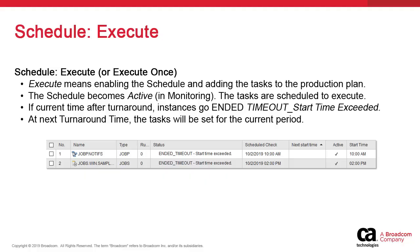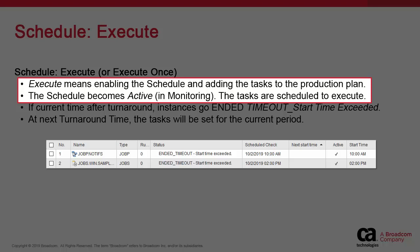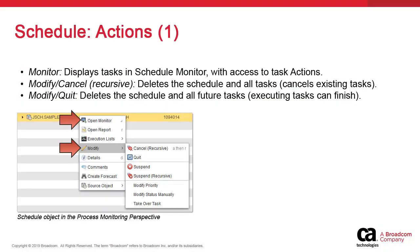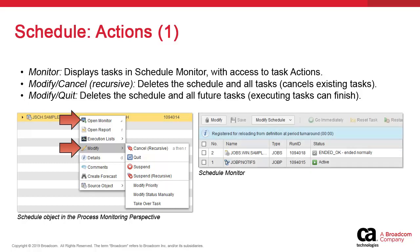Saving the schedule does not enable it — we have to execute it. This does not mean that the scheduled tasks execute right away, but instead they are activated and the tasks are scheduled and can be monitored. Assuming the start time of the task is after the period turnaround time — which is always the case if you keep the default midnight value — in the schedule monitor the tasks assume an EndedTimeout status. In the process monitoring perspective, we find schedule objects and the actions associated with the schedule object itself. Monitor simply displays the schedule monitor, which provides specific monitoring and control mechanisms over the schedule's tasks.